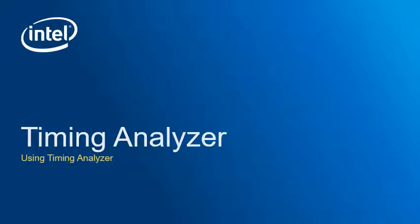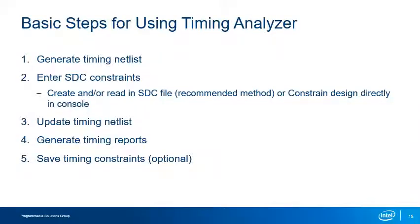Now that you're familiar with the Timing Analyzer interface, let's look at the steps involved in actually using the tool. Every time you use Timing Analyzer, you'll follow these steps: first, generate an SDC Timing Netlist — constraints cannot be read in or created without it. Next, read in or edit an existing .sdc file or constrain the design directly in the console. You'll then update the Timing Netlist based on entered constraints and generate timing reports. Finally, you have the option to write out your constraints into a separate .sdc file.